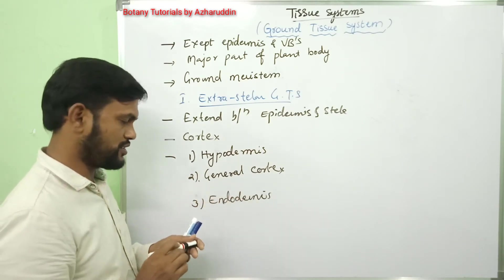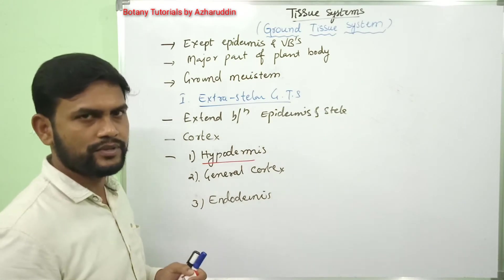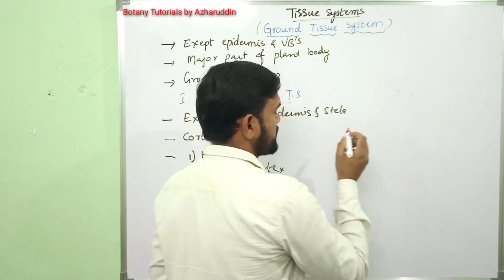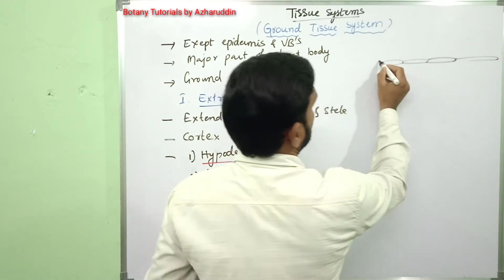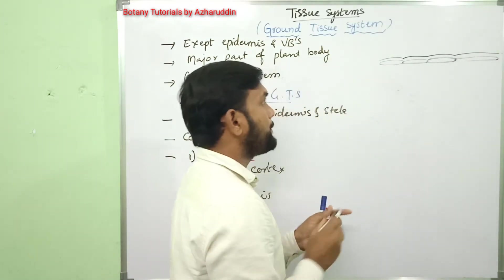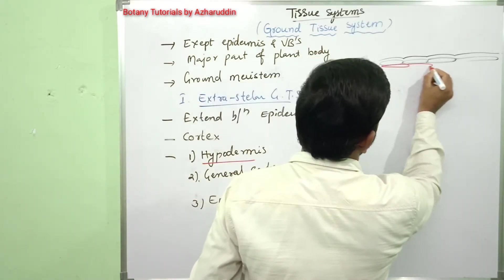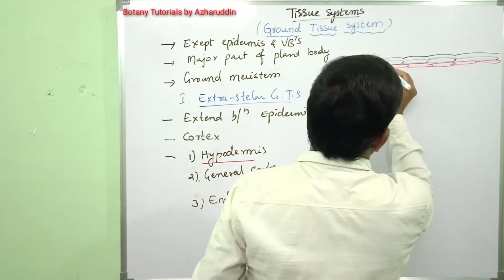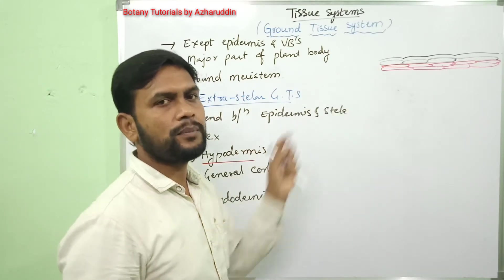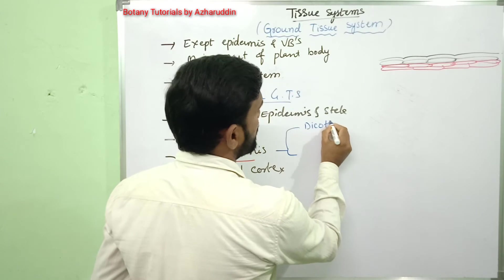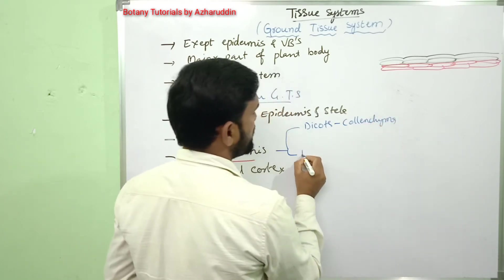Coming to hypodermis — hypodermis is the outer part of the cortex. Imagine this is epidermis; beneath the epidermis, hypodermis is present. It is composed of two or more rows of cells. In dicots, hypodermis is made up of collenchyma. In monocots, it is made up of sclerenchyma.